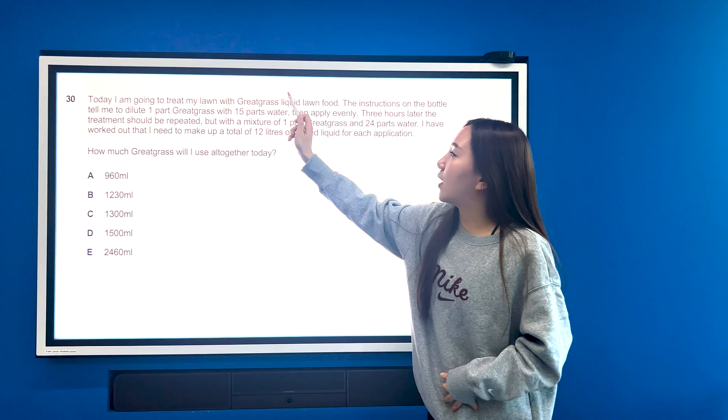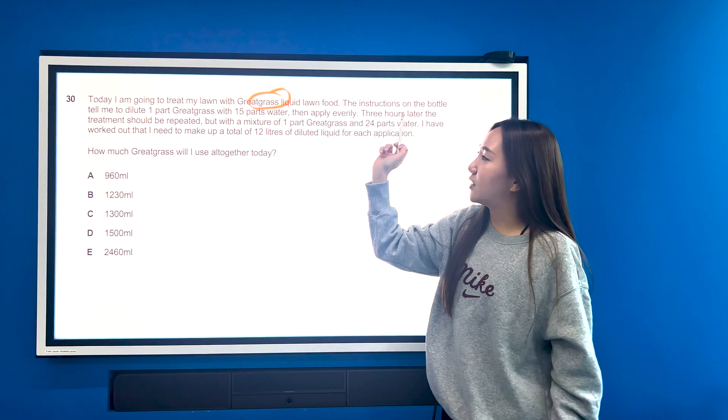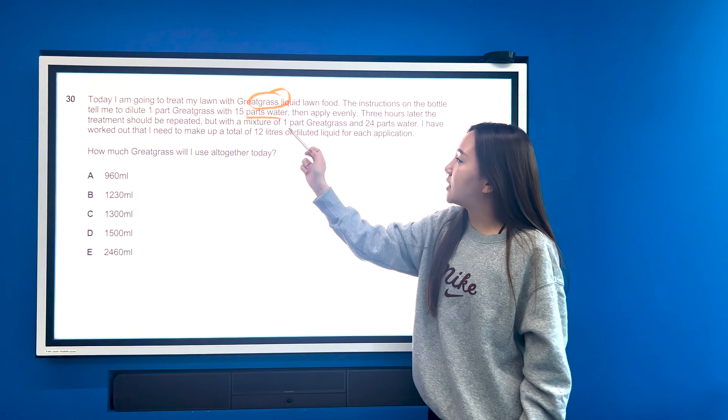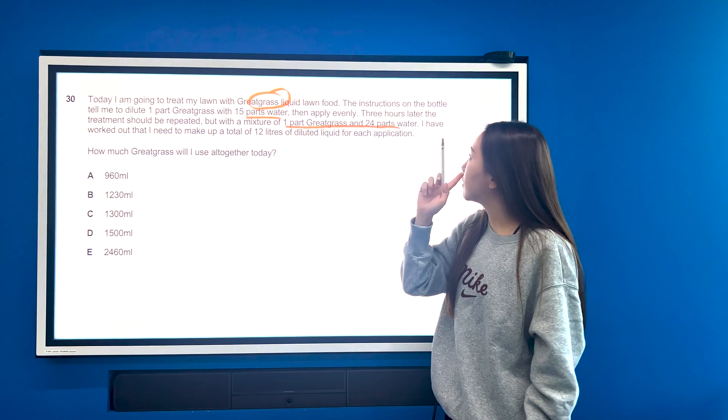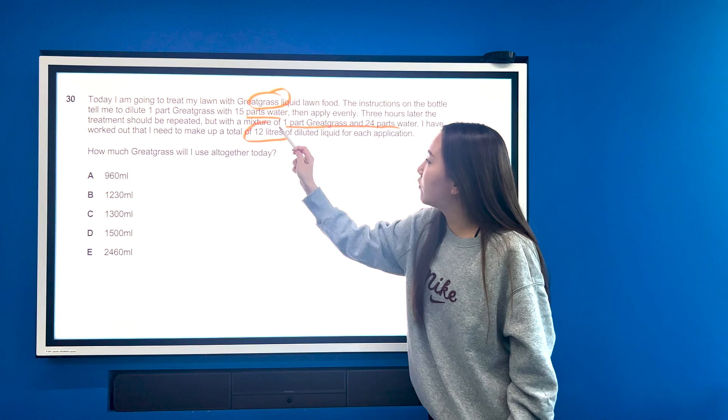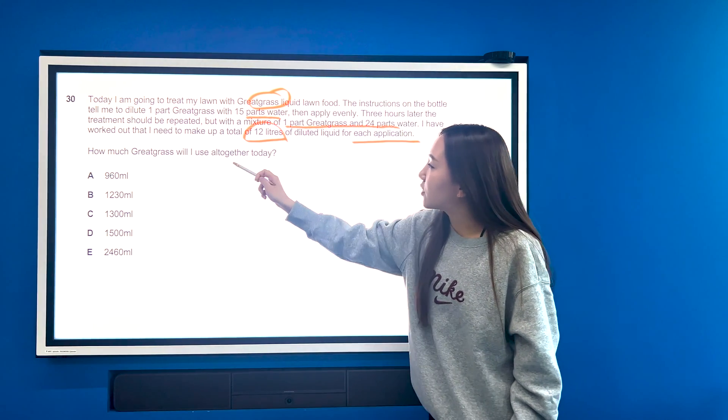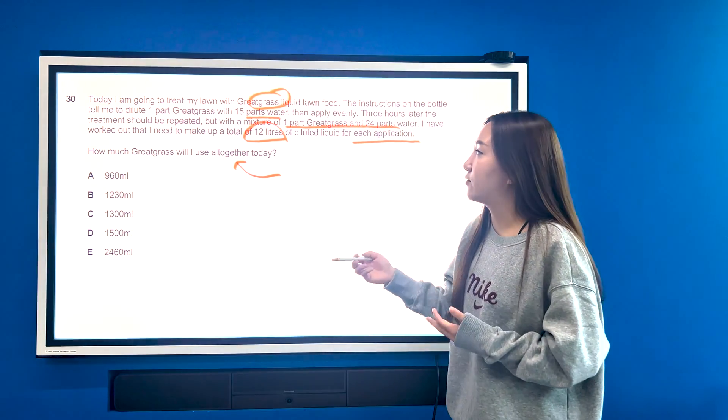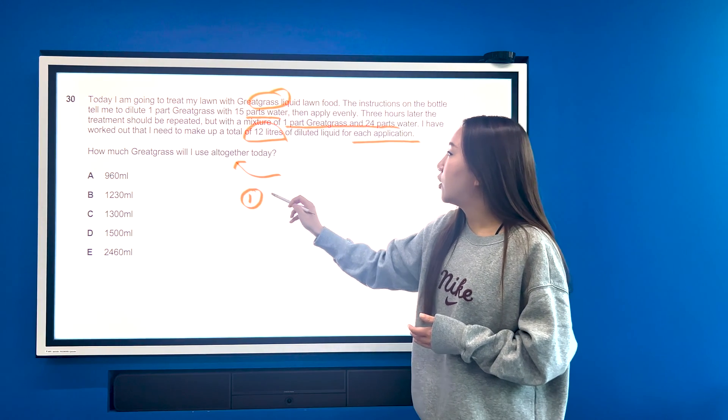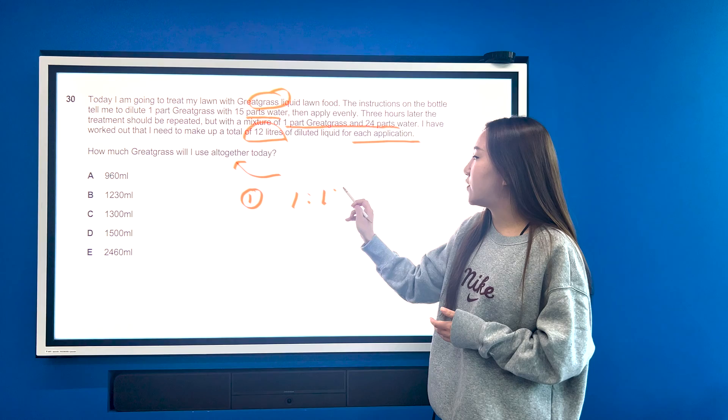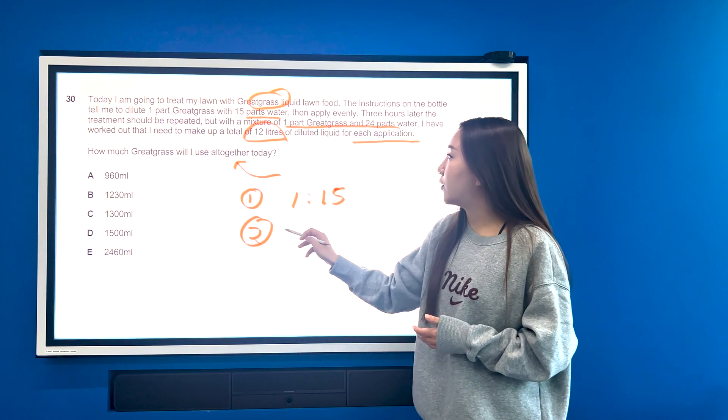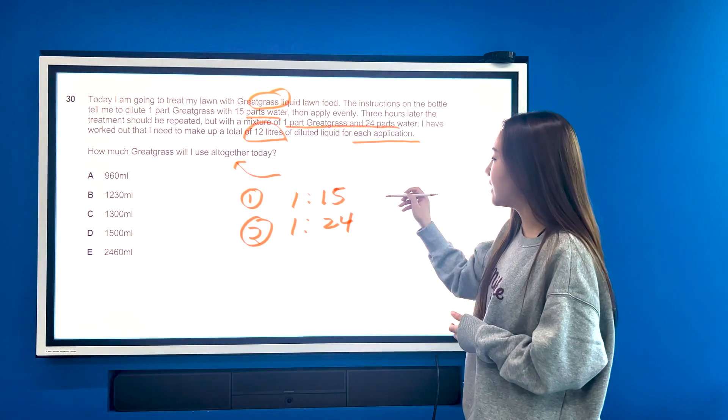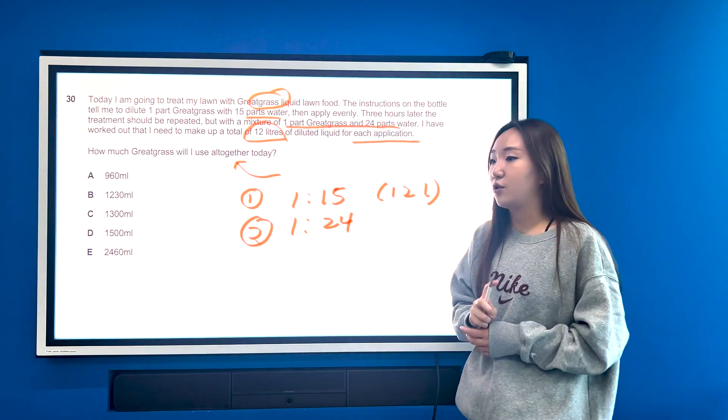So I've been given the question: I'm going to treat my lawn with Greek grass liquid food. The instructions tell me to dilute one part Greek grass with 15 parts water. Three hours later, the treatment should be repeated but a mixture of one part Greek grass and 24 parts water. I have worked out that I need a total of 12 litres of diluted liquid for each application. So how much Greek grass am I using altogether today? Now if you've already practiced this, then you should recognize this immediately as a ratios question.